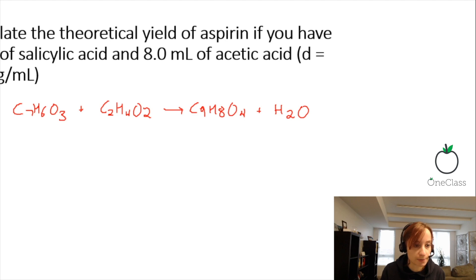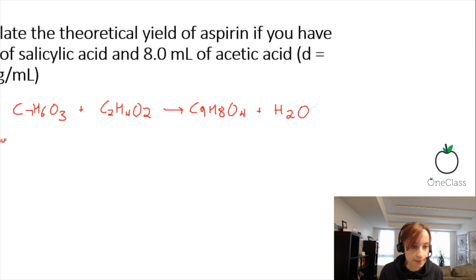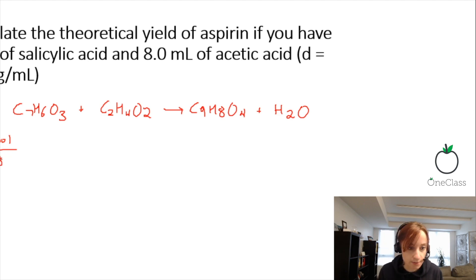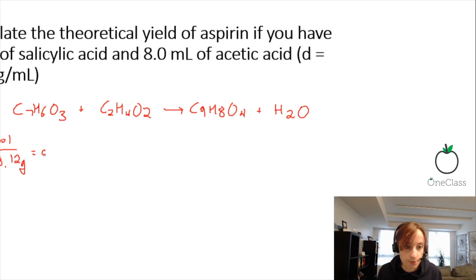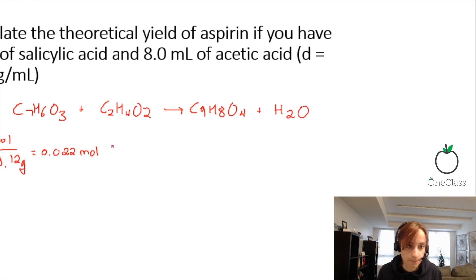For salicylic acid, C7H6O3, we started with 3 grams. The molecular weight is 138.12 grams per mole, which gives us 0.022 moles of salicylic acid.